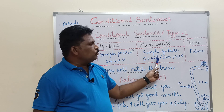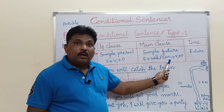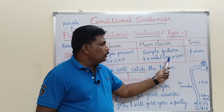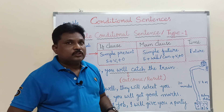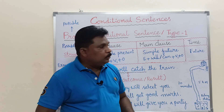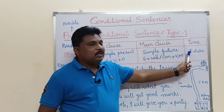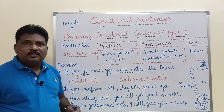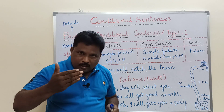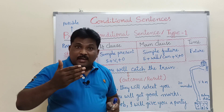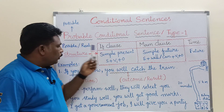Coming to the main clause, the tense is simple future — structure is subject plus 'will' (or 'can' can also be used). Coming to the time of action, the probable conditional sentence is used for future actions. So this probable conditional sentence is a possible one and also a real one — the action is possible in real life.